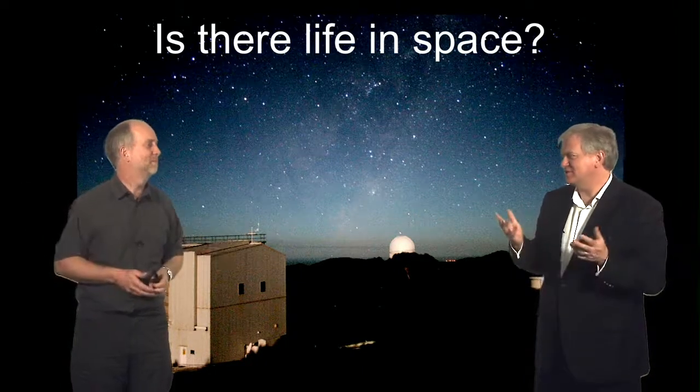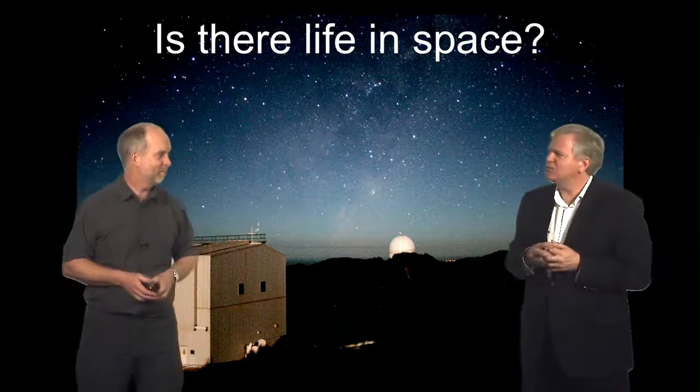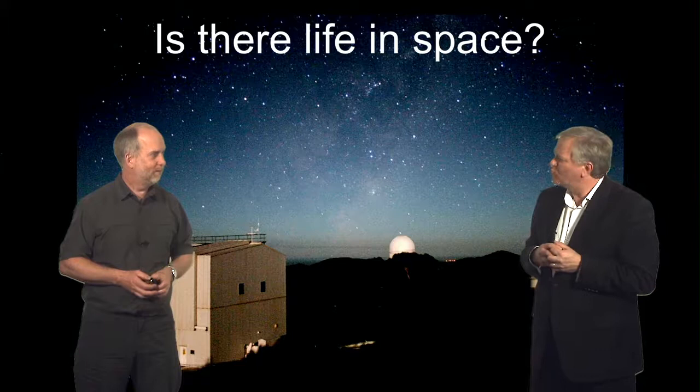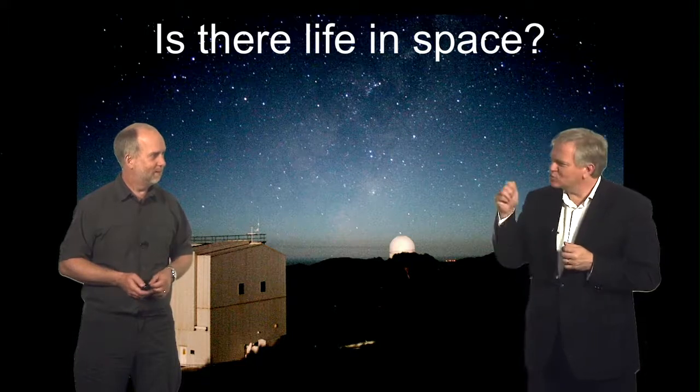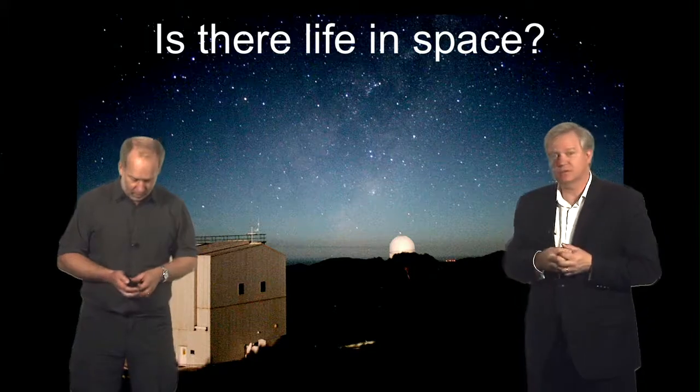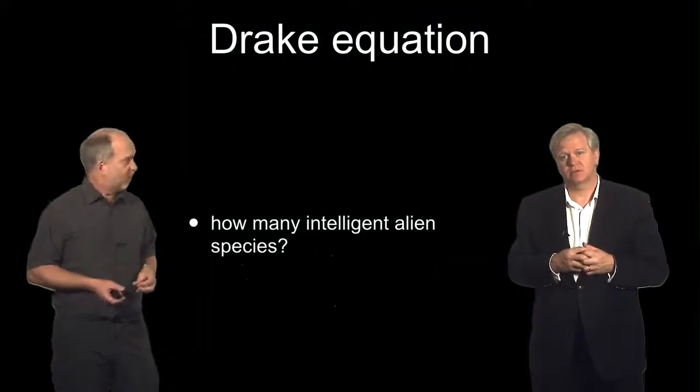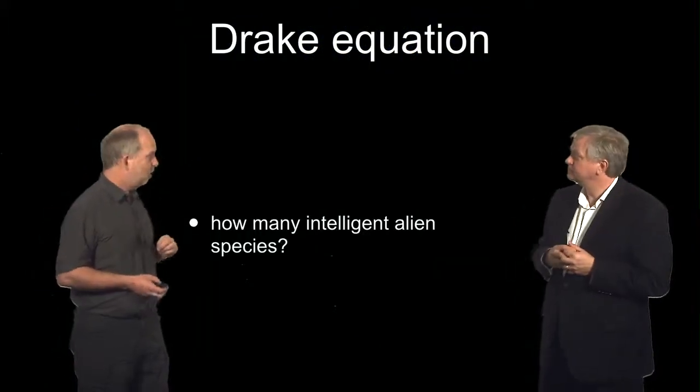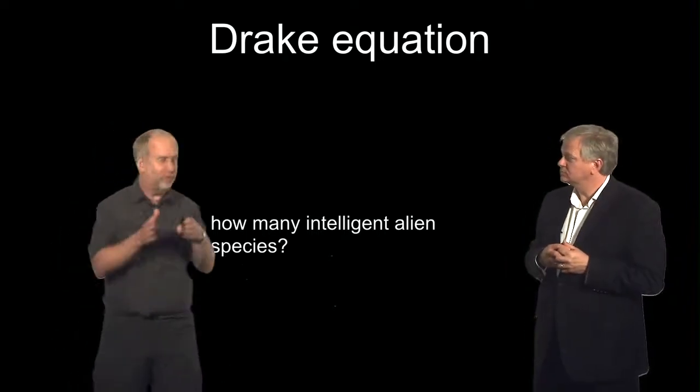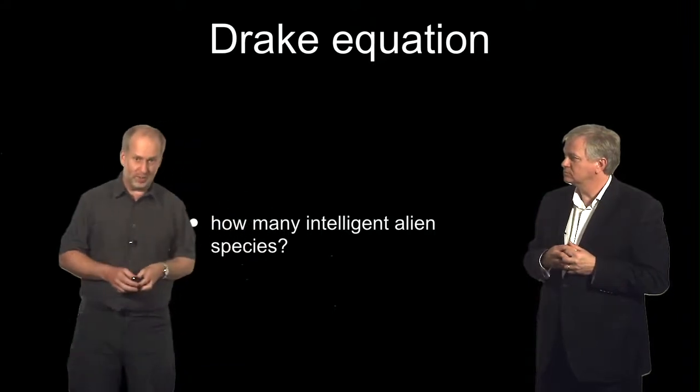All right, well, we're physicists, so it strikes me that maybe we need to bring a little bit of form to this question. We use equations, so maybe we can try to capture what's going on in an equation with some uncertainties. So the normal way this is done is what's called the Drake Equation, which is an attempt to not answer the question is there life in space, but at least break down all the different uncertainties and stack them out so we can see them.